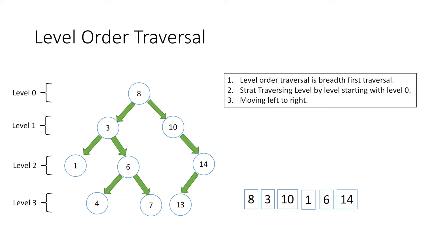Now we move on to our last level which is level 3, and starting from left we first print 4, then 7, and finally 13 which is the last node. And we are done with our level order traversal.